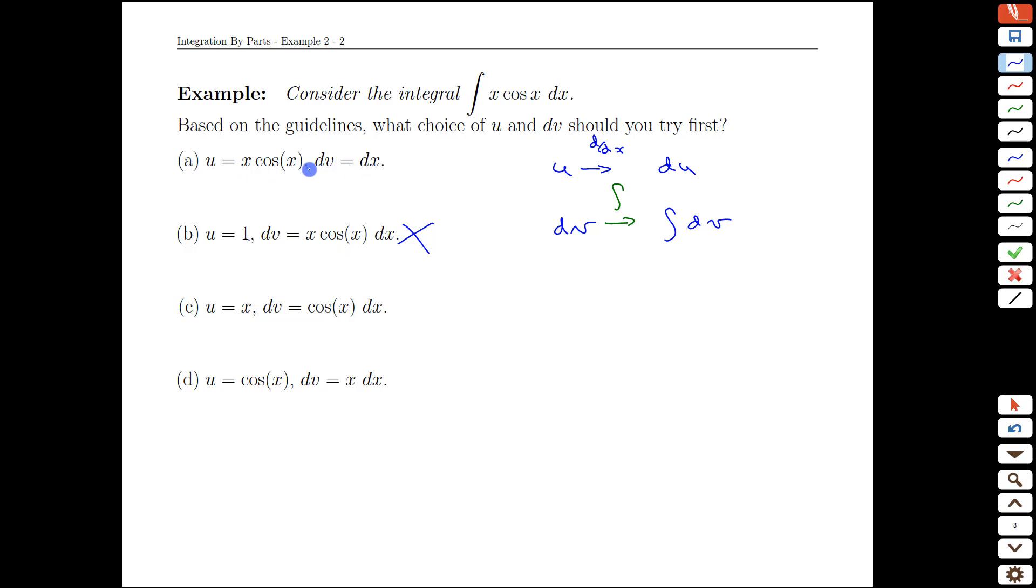This case here is reasonable. And notice we can pick something as simple as dv to be dx. That's totally allowed. As long as there's something in there and the dv has to keep the dx part. The problem with this, at least at first glance, is that your derivative of x cos x is going to be a product rule. So you're going to get a complicated du on that one. So I wouldn't rule this one out, but it would be lower on the priority scale, something we would try last.